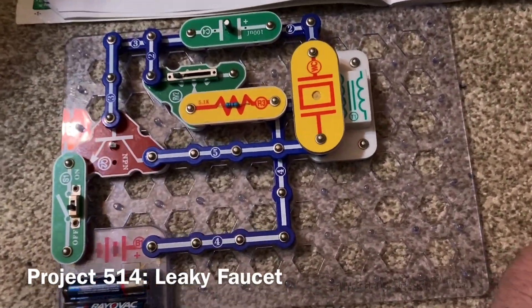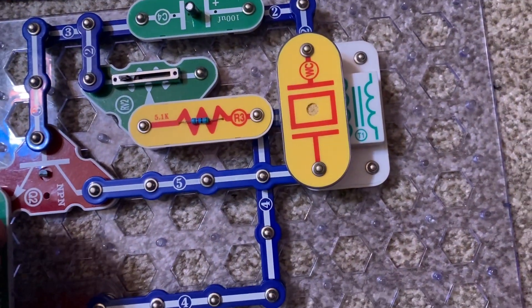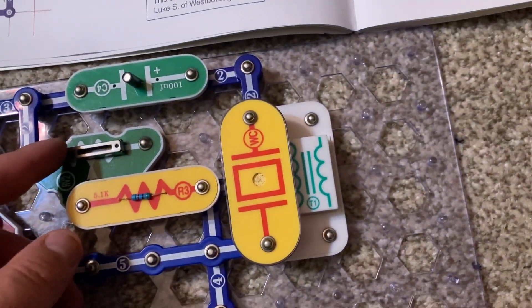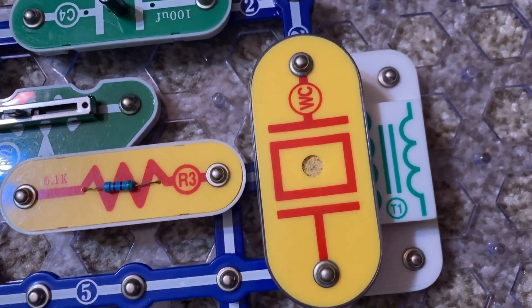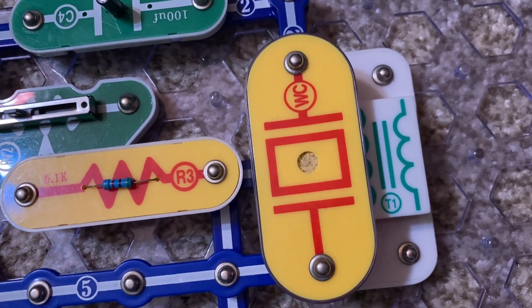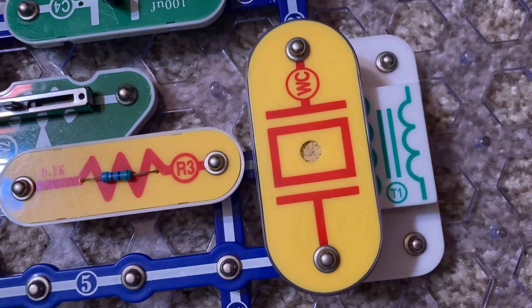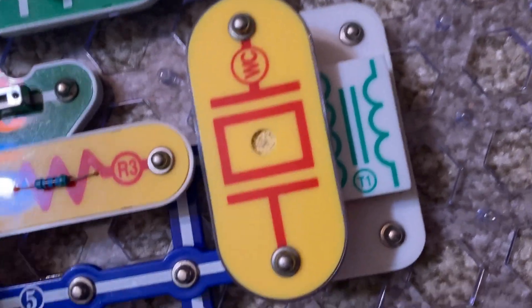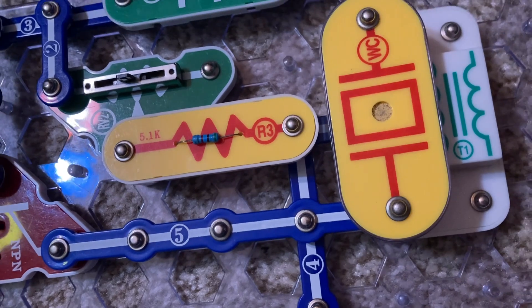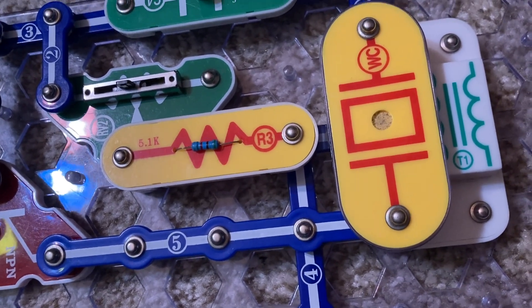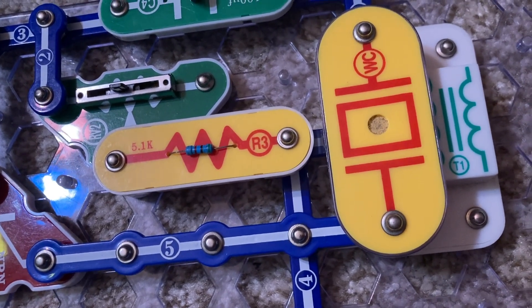This circuit will sound like a leaky faucet. Turn on the slide switch and move the adjustable resistor. You hear clicking sounds from the whistle chip. Does it sound like dripping water from a faucet to you?